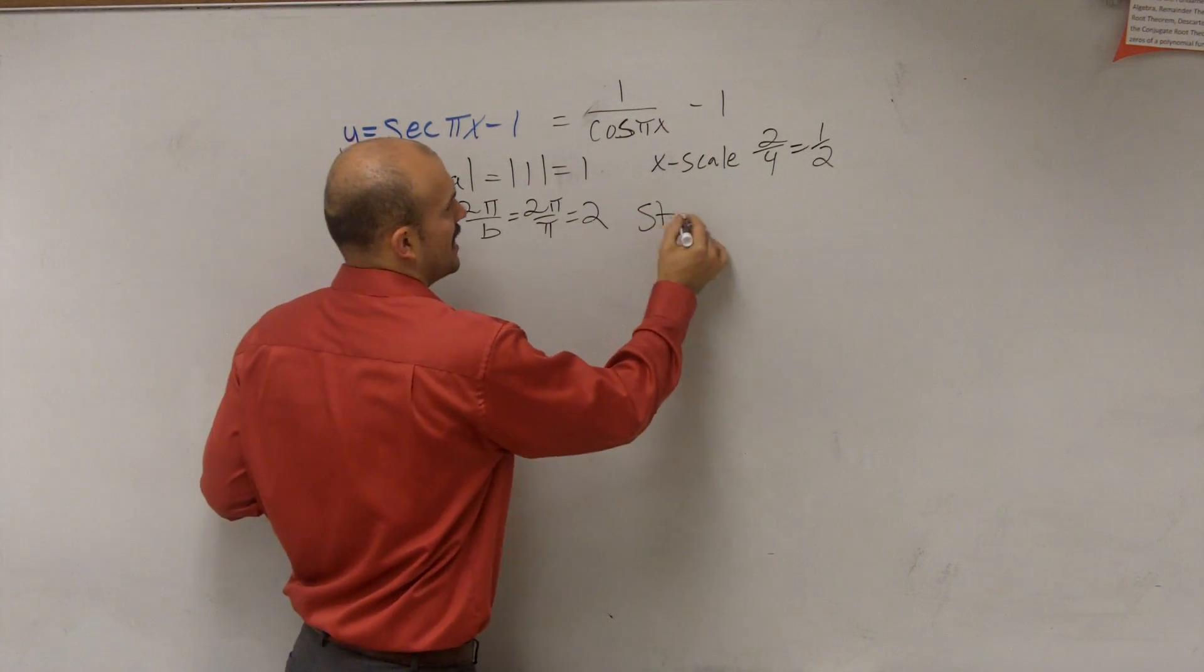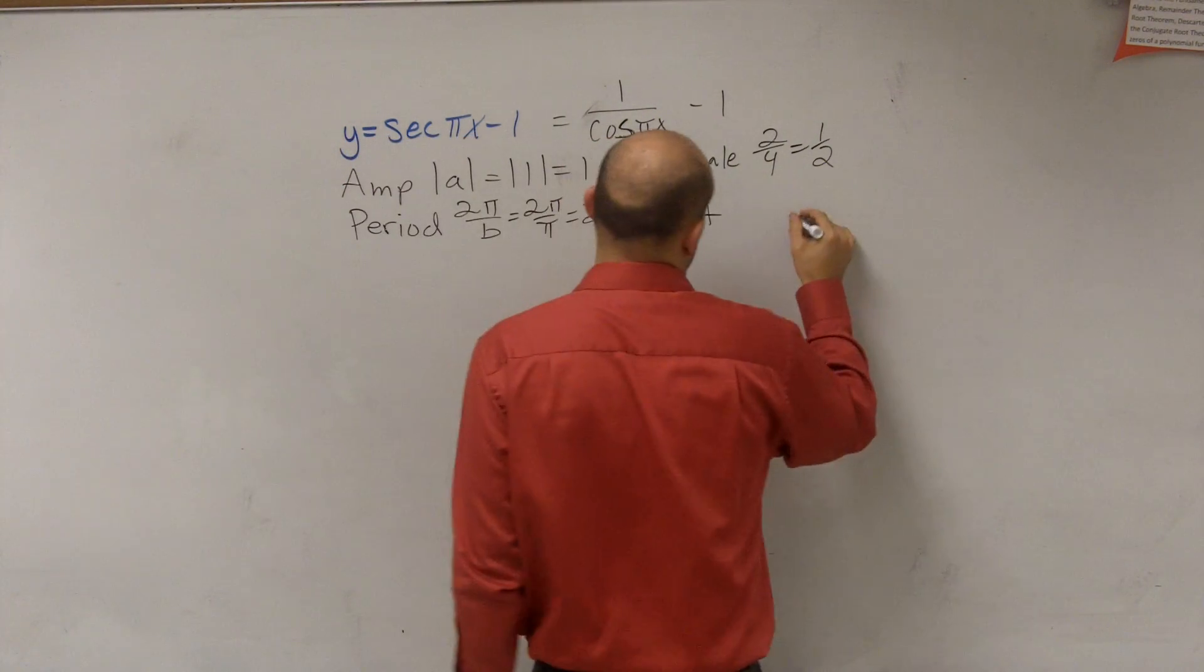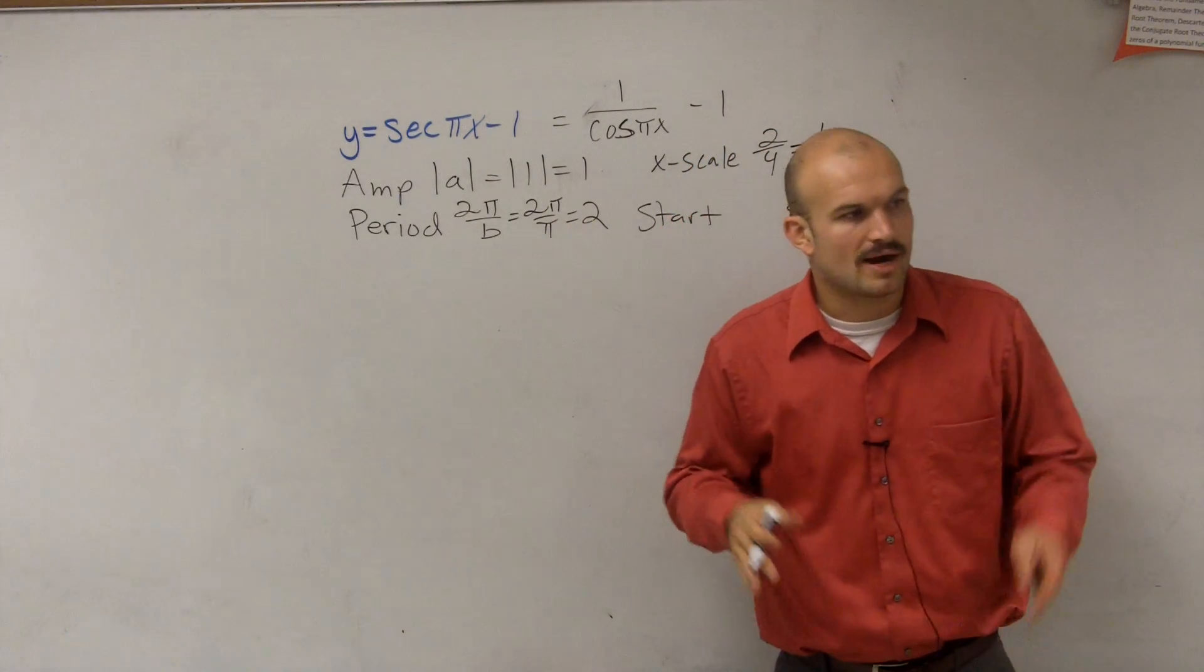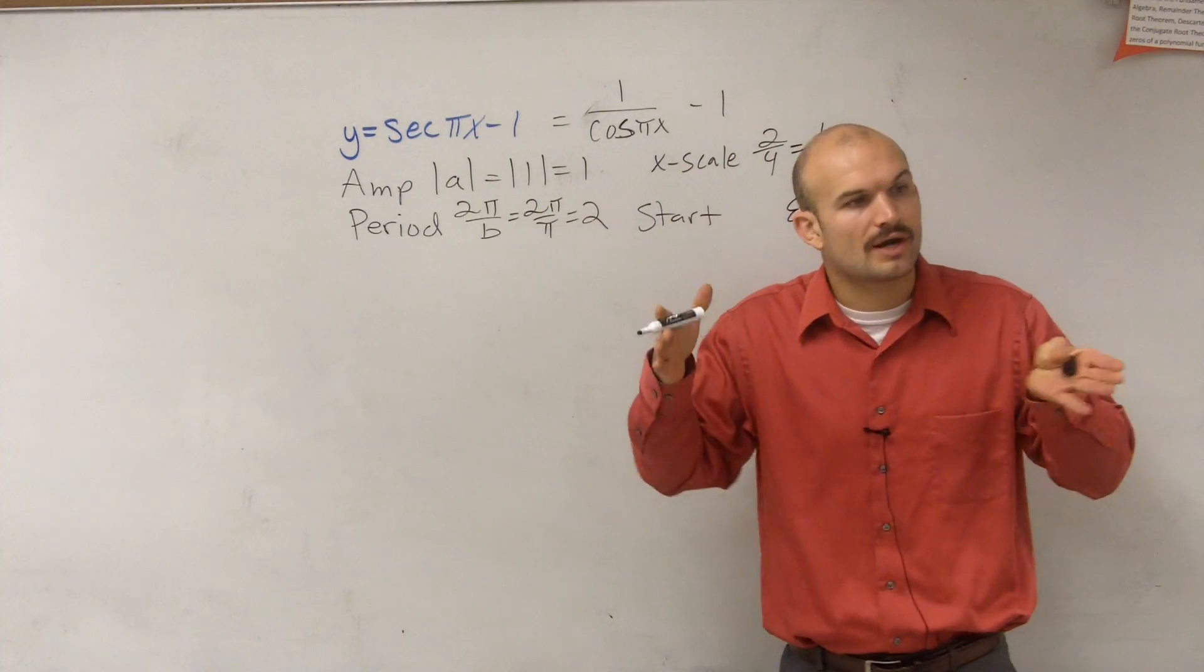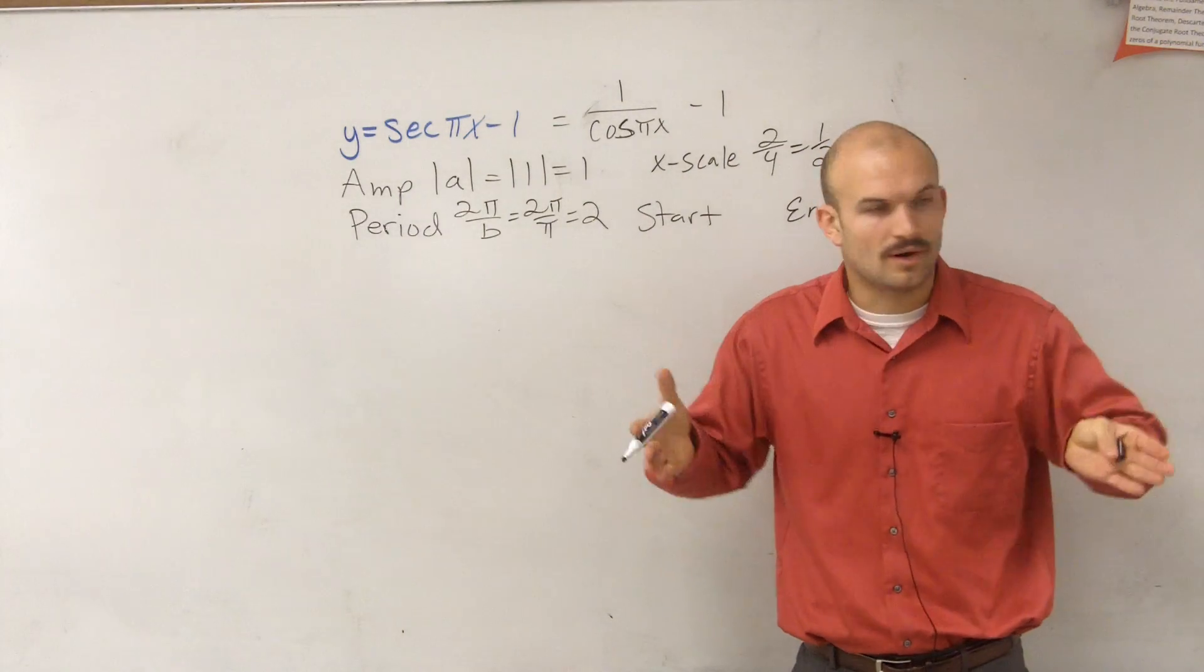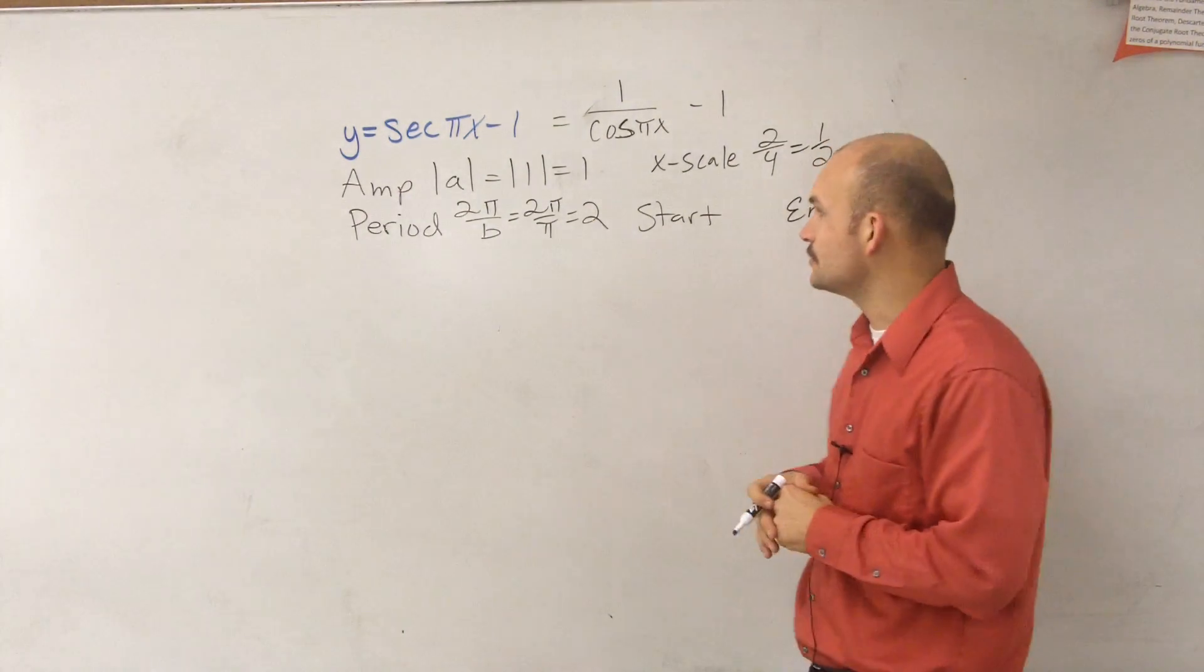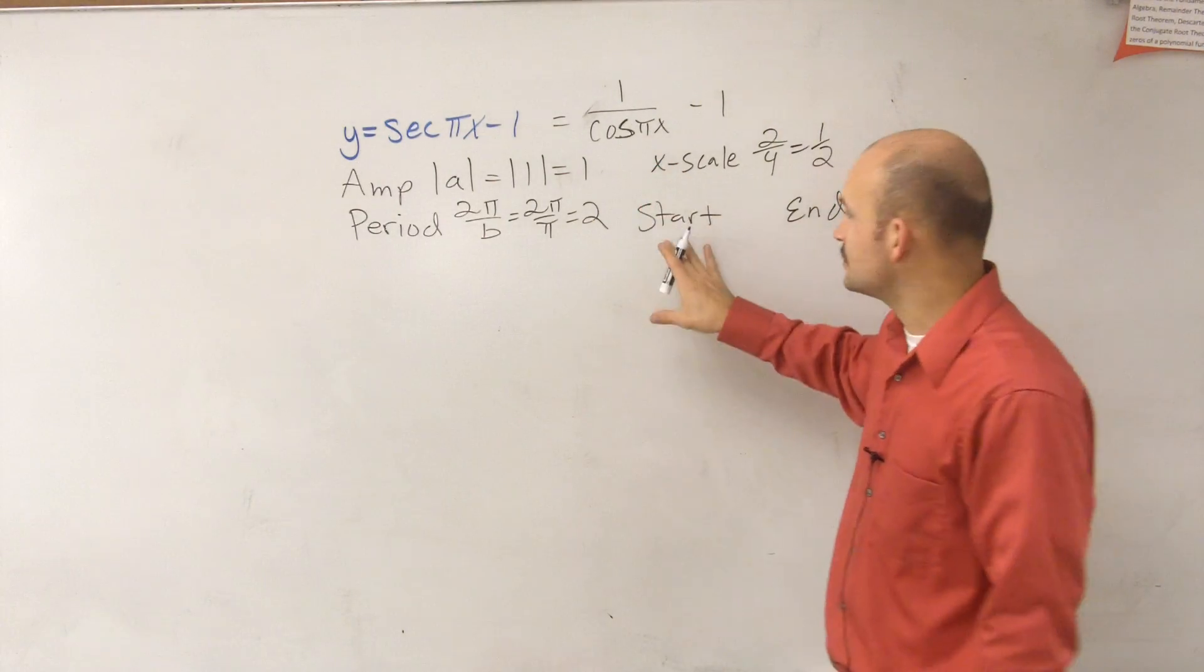And then we have a start and an end of our initial period. Remember, these functions continue on and on forever. So we're starting and ending just for our initial period, because once we can graph one initial period, then we can continue it in either direction.